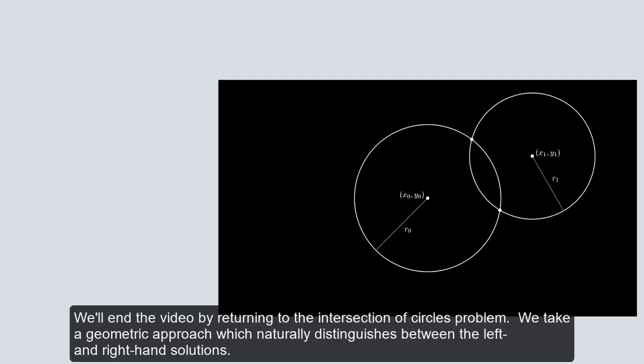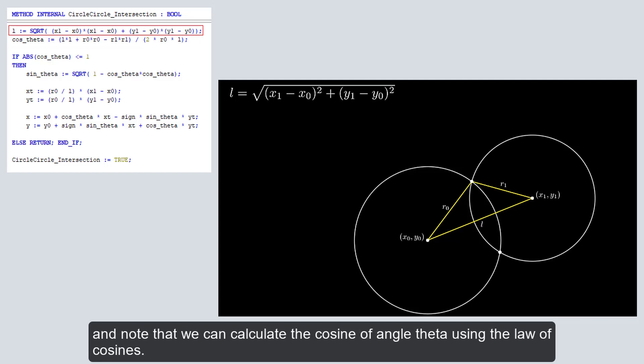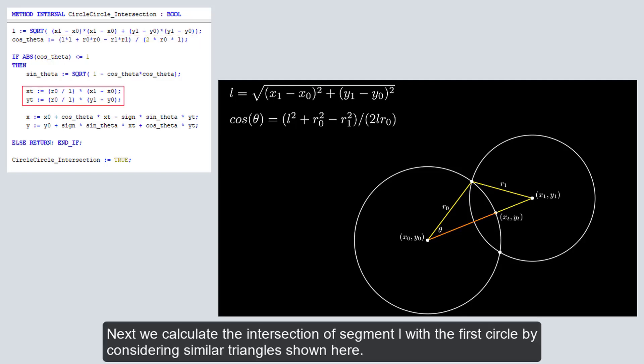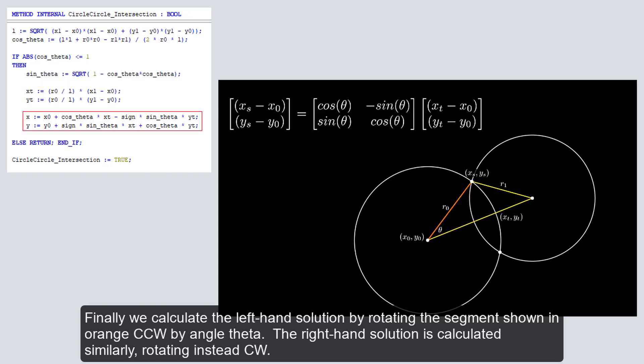We'll end the video by returning to the intersection of circles problem. We take a geometric approach which naturally distinguishes between the left and right-hand solutions. First, consider the triangle shown here. We calculate the length of line segment L using the standard distance formula, and note that we can calculate the cosine of angle theta using the law of cosines. Next, we calculate the intersection of segment L with the first circle by considering the similar triangle shown here. Finally, we calculate the left-hand solution by rotating the segment shown in orange counterclockwise by angle theta. The right-hand solution is calculated similarly, rotating instead clockwise.